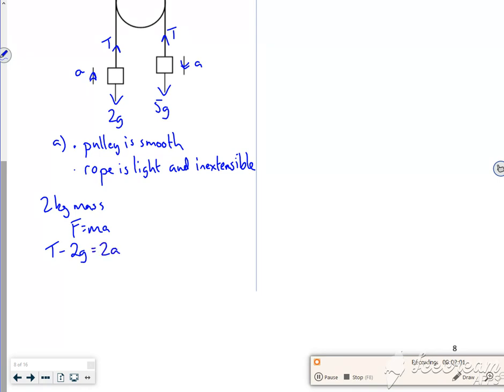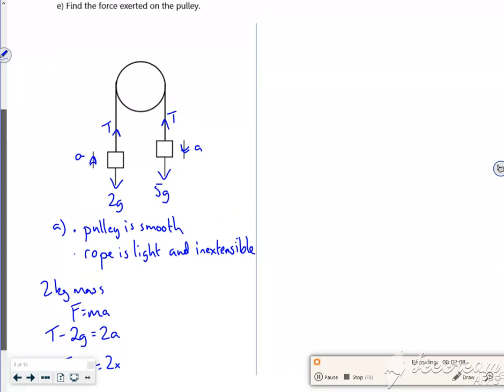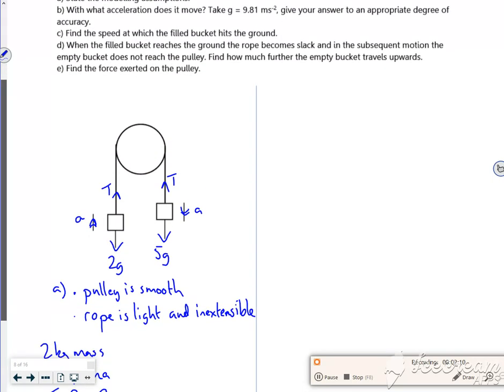So if I put the t and the a on the same side, I've got t minus 2a is 2 lots of g, which I've taken as 9.81.